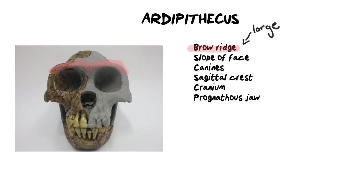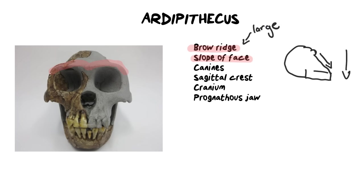We then move on to the slope of the face. It's sometimes difficult to see, which is why they might give you a side angle. When we talk about the slope of the face, we mean the eyebrow ridge and the slope coming forward with this very pronounced jaw. When they speak about the slope, they're saying it has a sloped face. If you have a sloped face, you are a very old fossil. Over time the slope should reduce, less and less, until eventually you have a flat face.